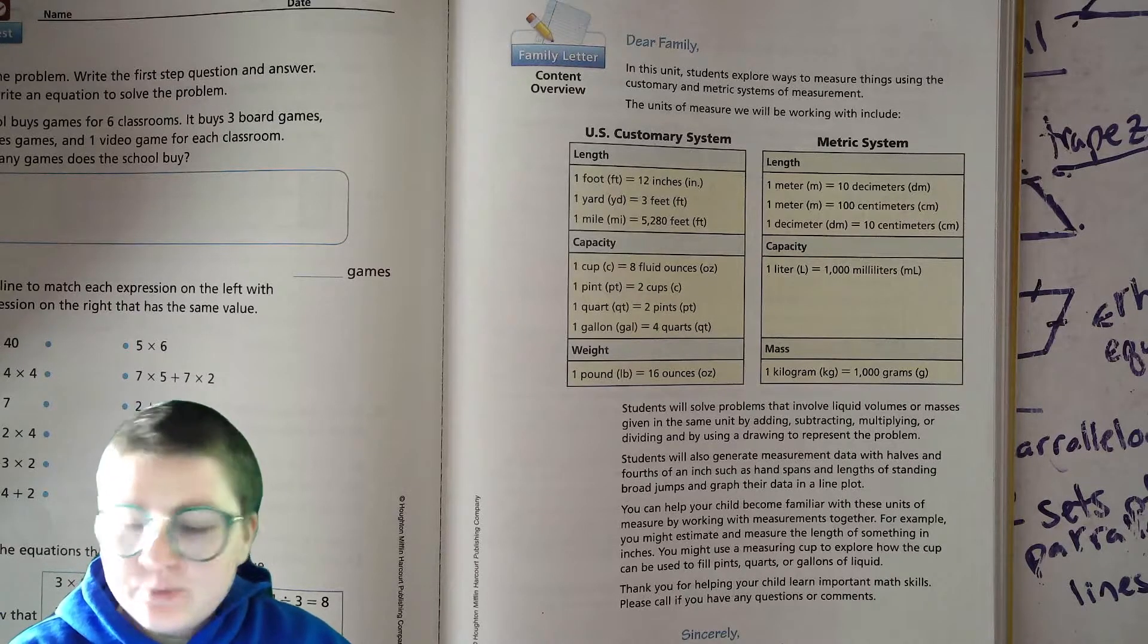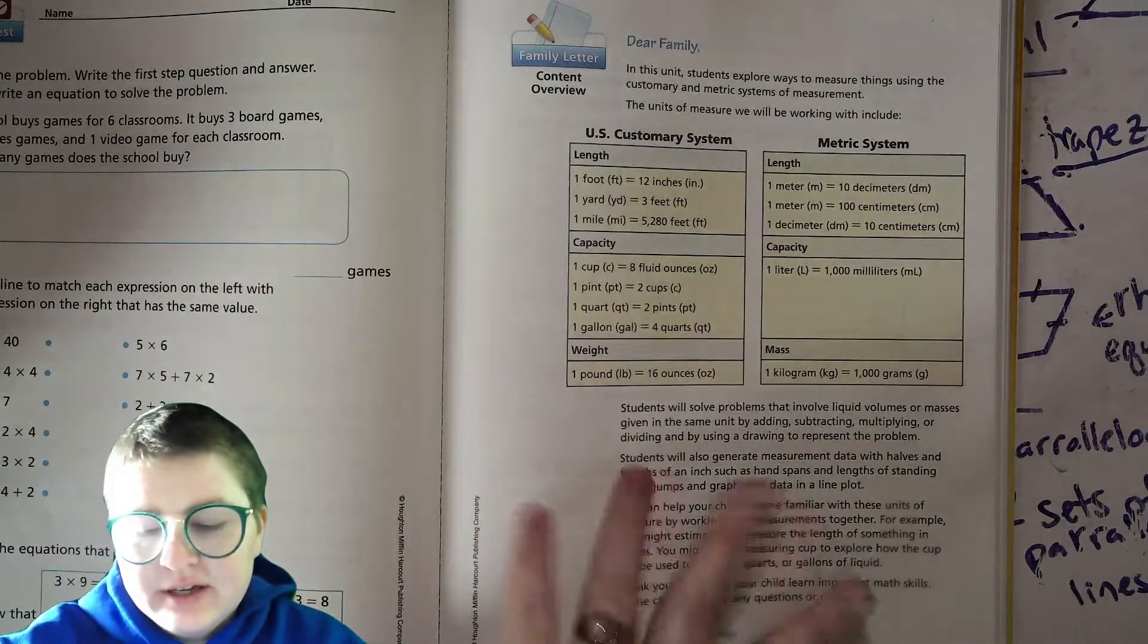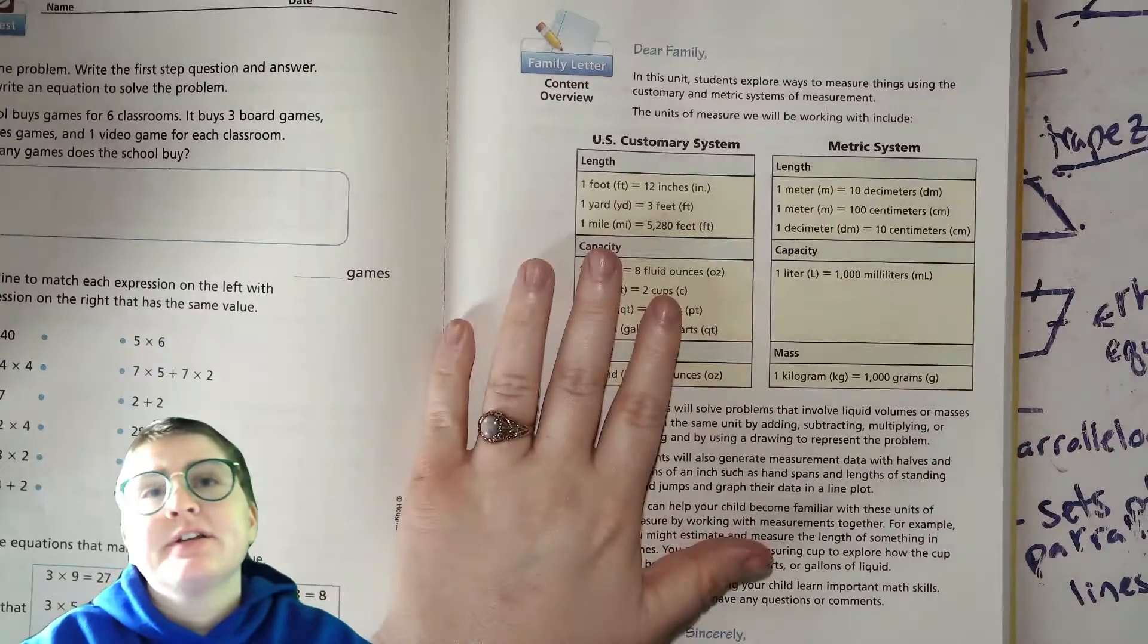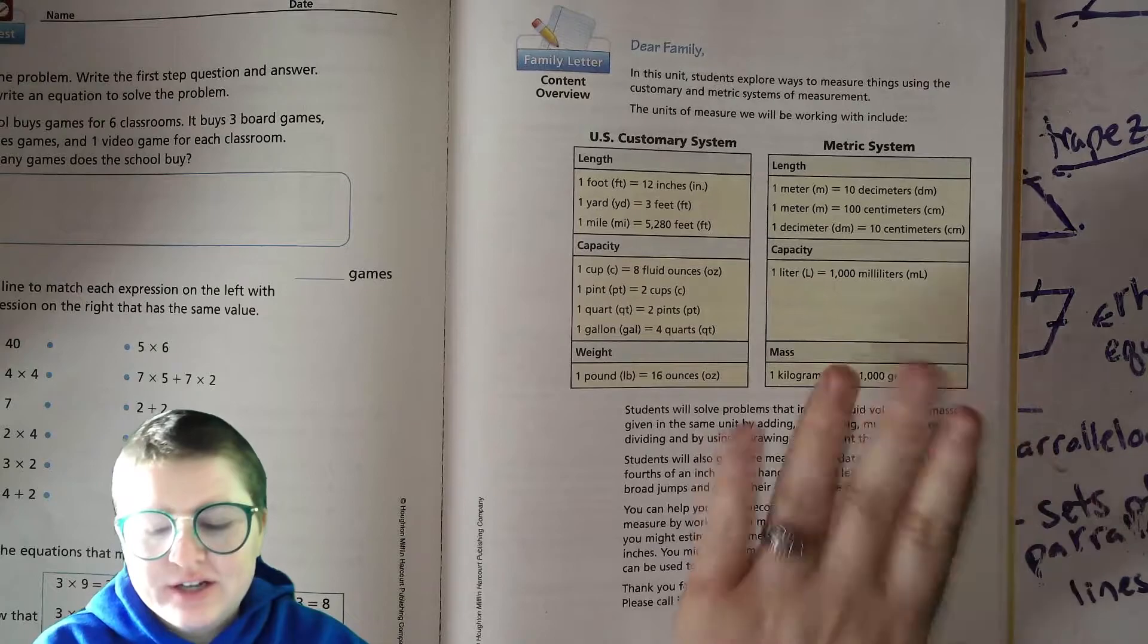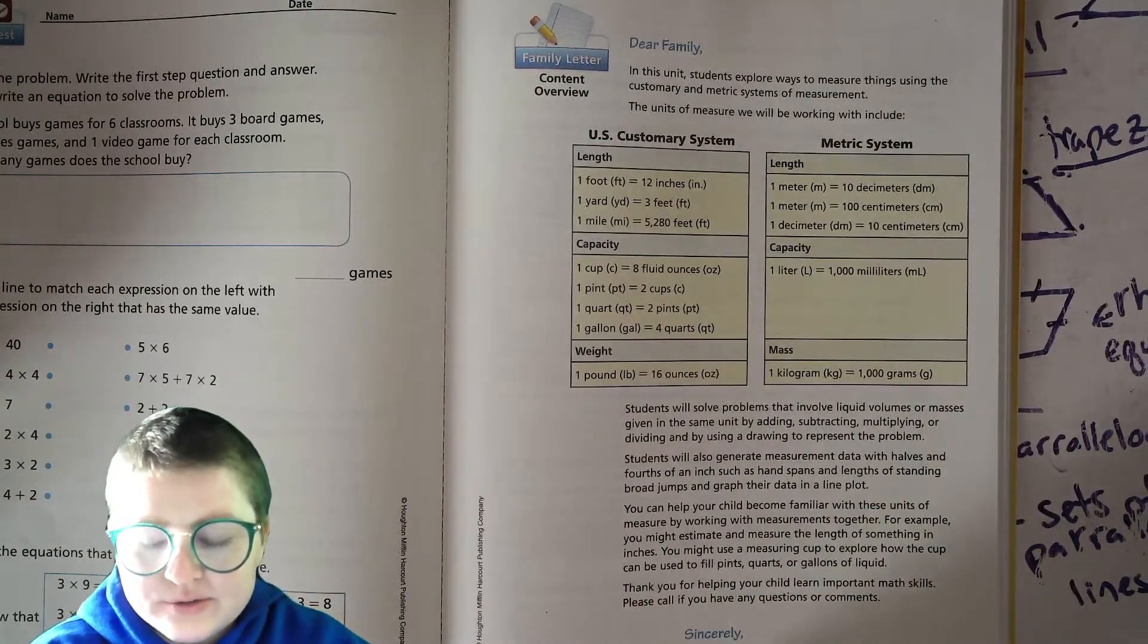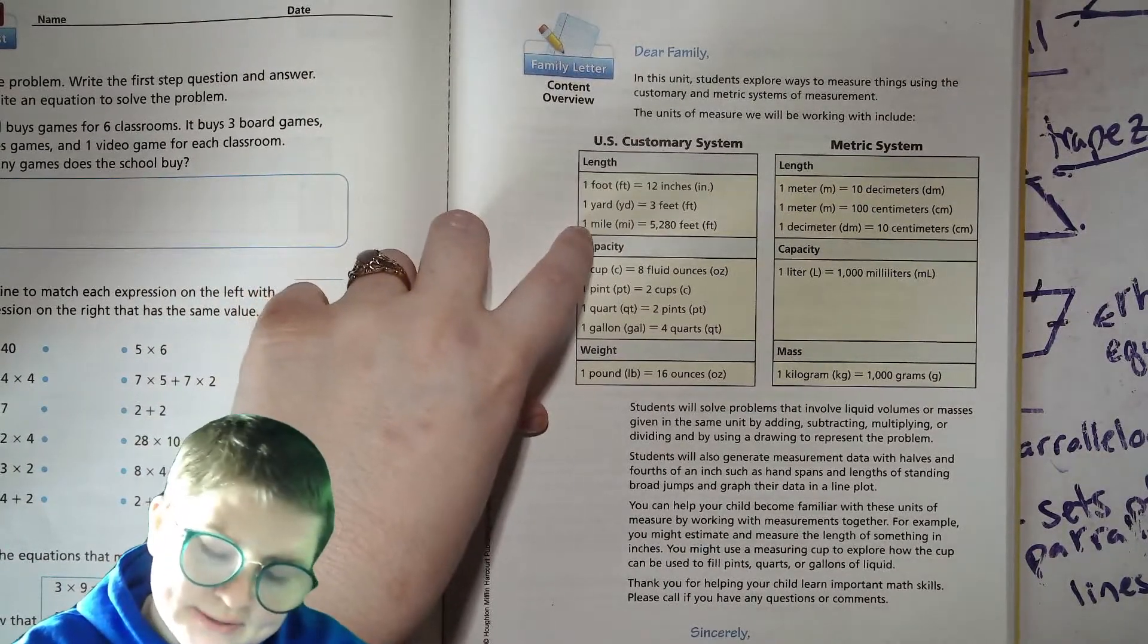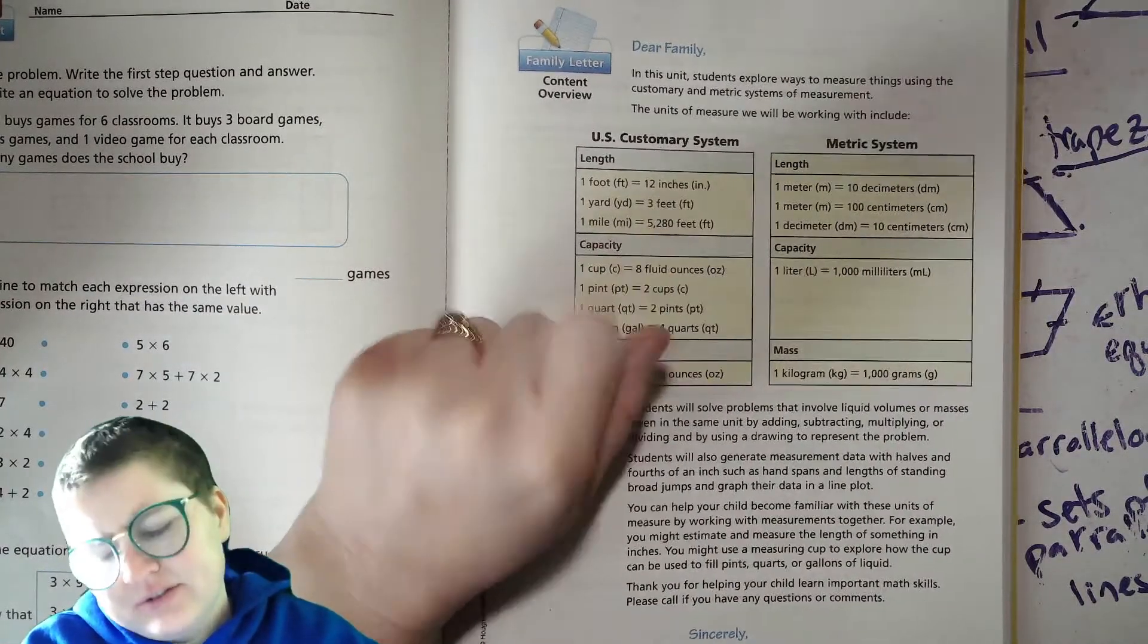Hello third graders and welcome. We are beginning unit 3 lesson 1. First we talk about the different systems of measurement. In America we use what's called the customary system. The rest of the world, except for maybe one other country, uses the metric system. So it's really important that we learn both. For length in the US we have feet, inches, yards, miles, and you can see here the relationships between the numbers are a little random it seems.